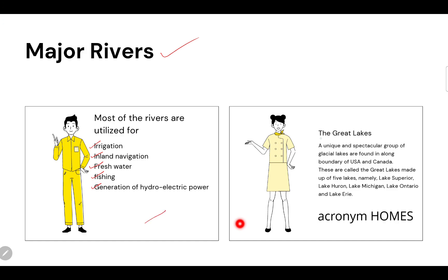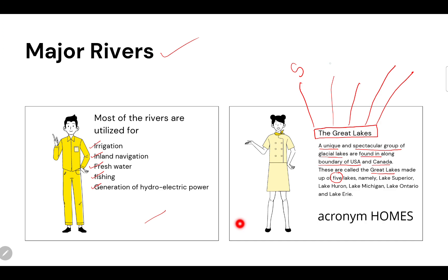The Great Lakes are a unique and spectacular group of glacier lakes found along the boundary of the USA and Canada. The Great Lakes consist of five lakes: Lake Superior, Lake Huron, Lake Michigan, Lake Ontario, and Lake Erie. The acronym formed from the first letter of each lake is HOMES.